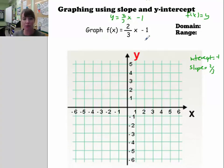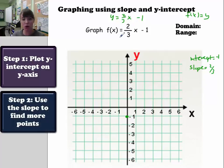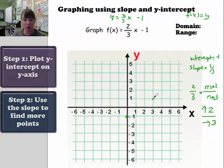Here's how you graph using slope-intercept form. Step 1: plot the y-intercept. Since it's negative 1, I'll plot that on the y-axis. Step 2: use the slope to find more points. The slope is 2/3, so there's a rise of 2 and a run of 3 — meaning up 2 and right 3. So I can go up 1, 2, and right 1, 2, 3, and there's another point.